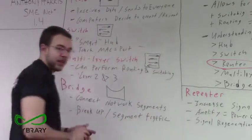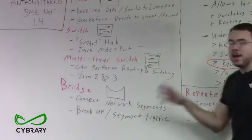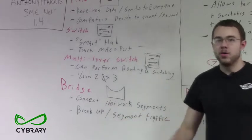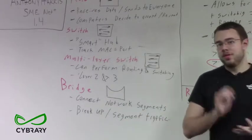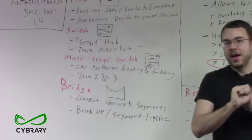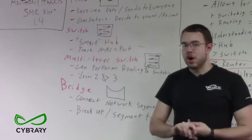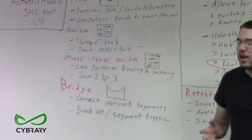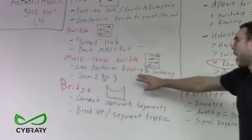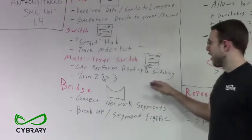What's the difference between our multi-layer switch and our standard switch? Our multi-layer switch can perform Layer 3 as well as Layer 2 operations. Remembering our OSI model — 'Please Do Not Throw Sausage Pizza Away' — Layer 2 is the data link layer and Layer 3 is the networking layer, our IP addressing layer. So a multi-layer switch can perform both routing and switching.